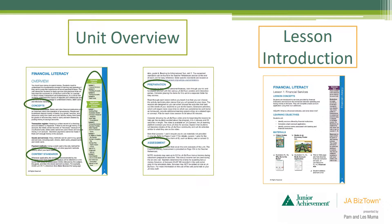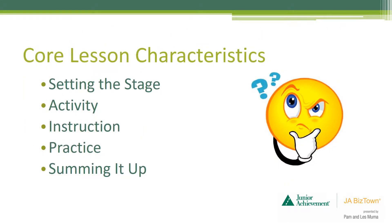The lesson introduction of each lesson is composed of concepts for each lesson including a brief overview, learning objectives, and materials which consist of the items needed — these are found in the JA BizTown classroom kit. Each core lesson includes the following characteristics: setting the stage, which gets students intrigued and curious about the lesson; an activity which breaks up the lesson so it's easily taught in one session, including games, art projects, or demonstrations; instruction which includes review, teacher-led discussion, guided practice, vocabulary, and visual aids; practice which consists of independent practice to help students master the lesson; and summing it up, which allows you to check for student understanding.